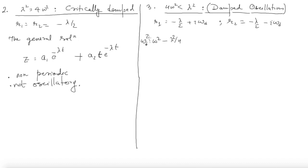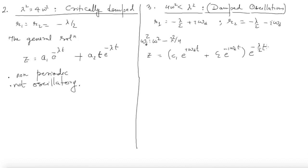The most general complex solution is: z = (c₁·e^(iωd·t) + c₂·e^(−iωd·t))·e^(−λt/2). Note that the overall factor e^(−λt/2) gives exponential damping — this is exponentially decaying as time grows. This is the most general solution.